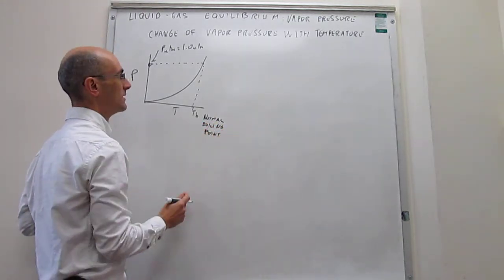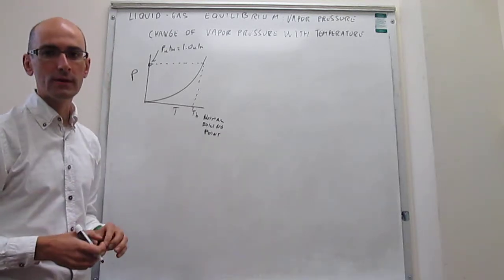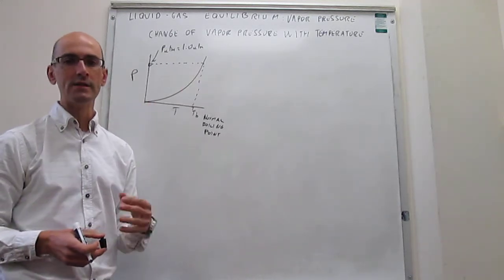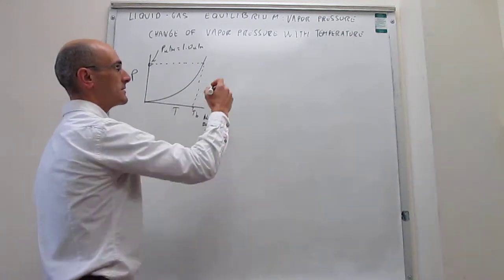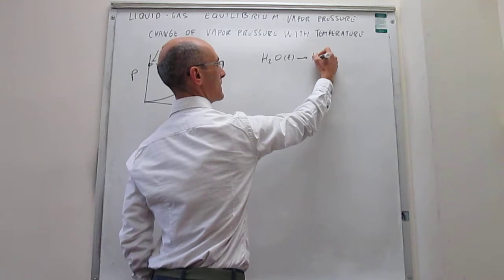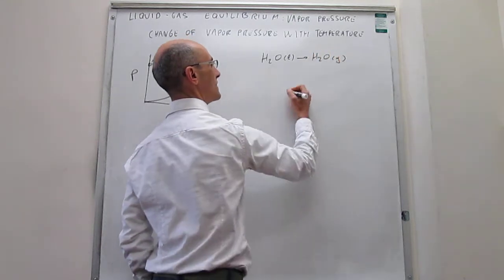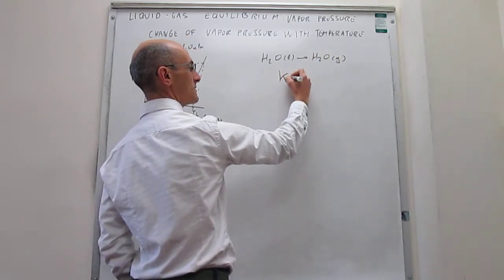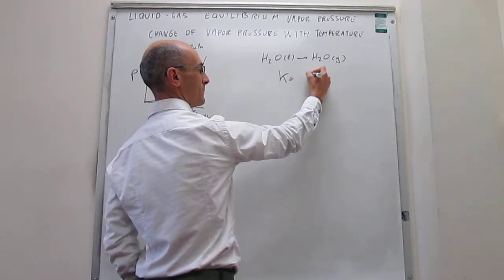Now the question is how do we calculate that change in pressure with temperature in a quantitative manner? What we have said is that when you have a liquid to gas equilibrium, we have explained this in a prior video, so you can check that. Notice that the equilibrium constant for this process is simply the pressure of the gas.